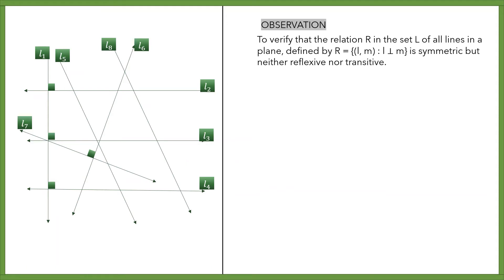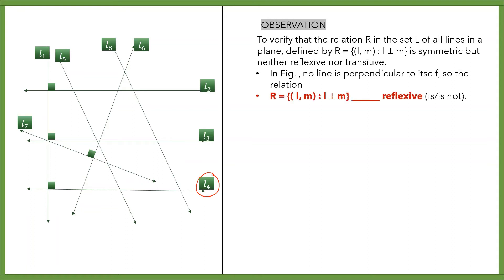Looking at any line on the left-hand side, no line is perpendicular to itself. Take the example of line L4: is L4 perpendicular to itself? No. We can say that no line is perpendicular to itself. Therefore, relation R is not reflexive.